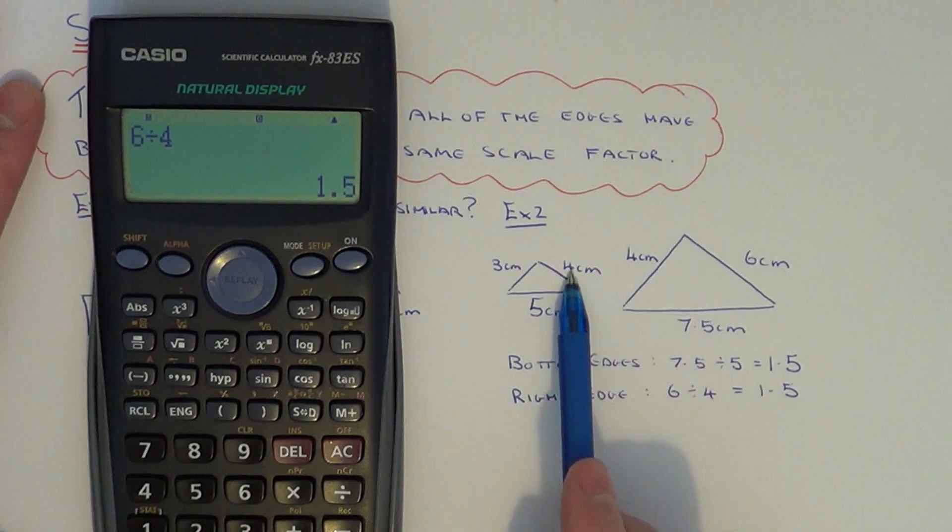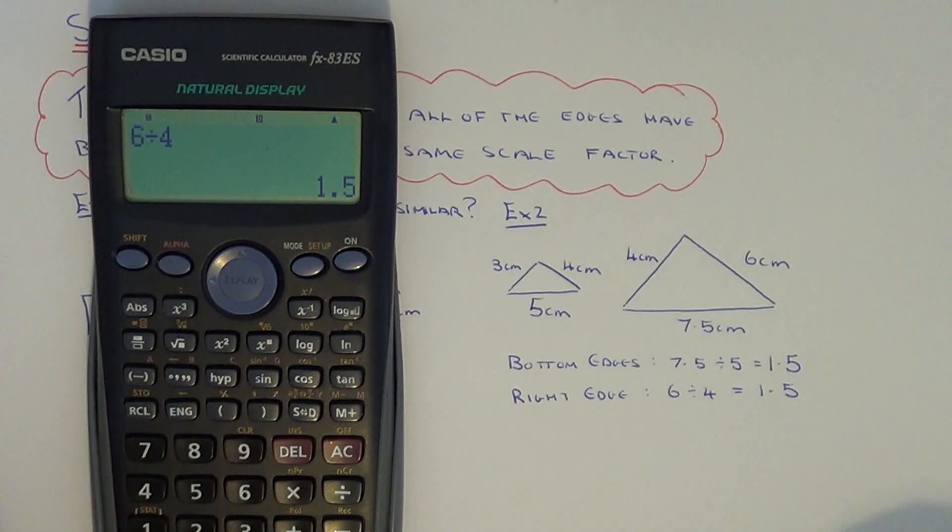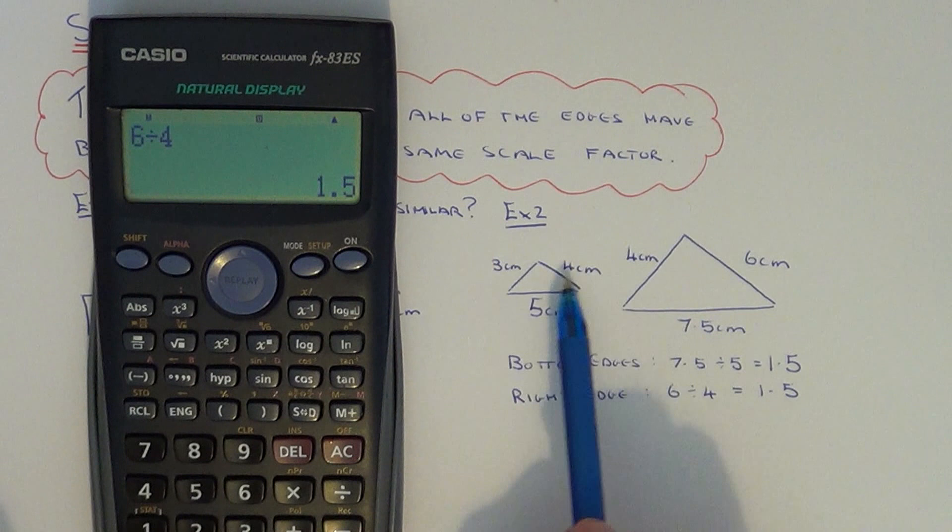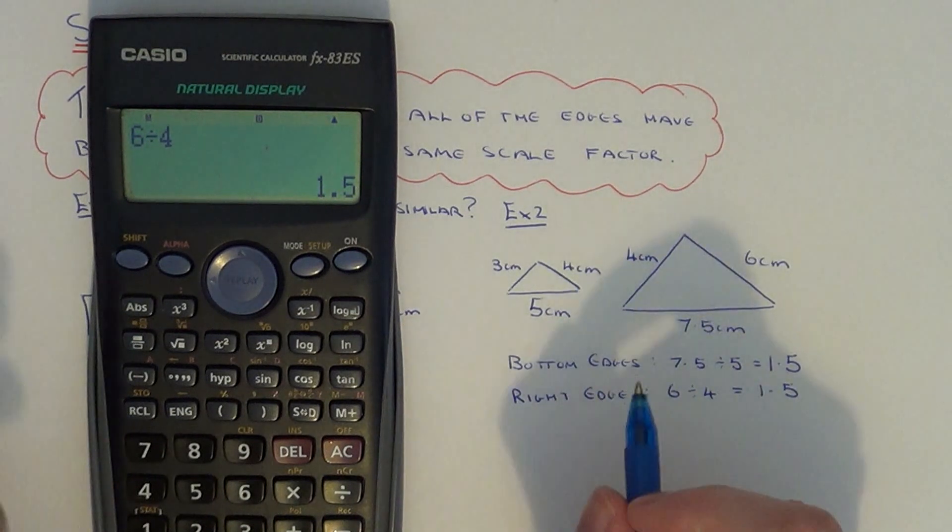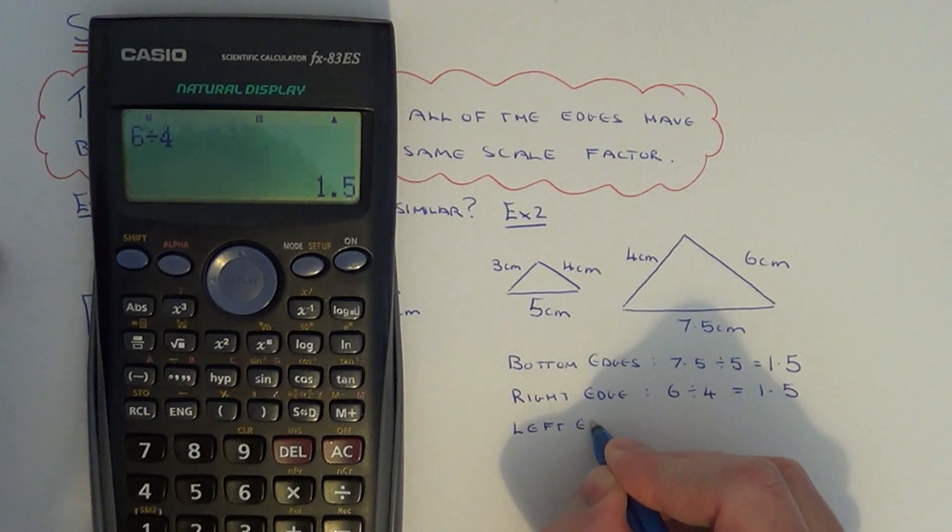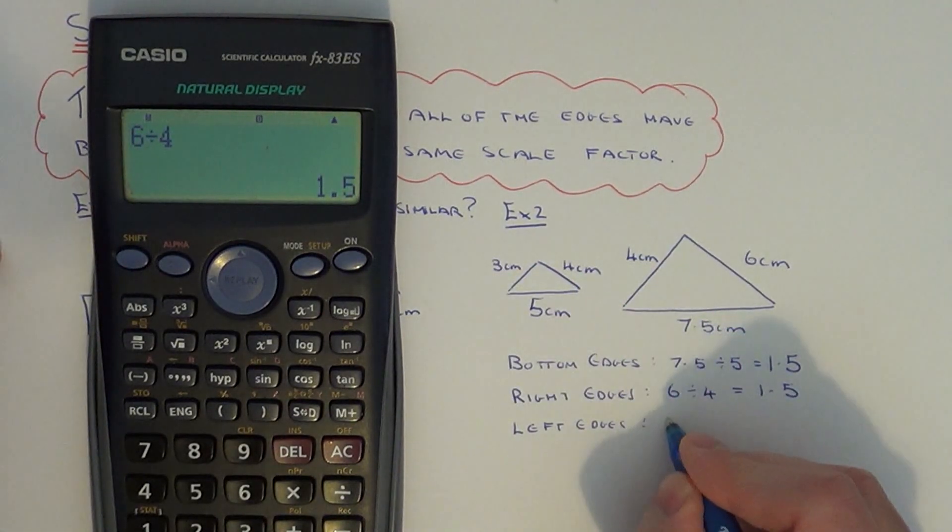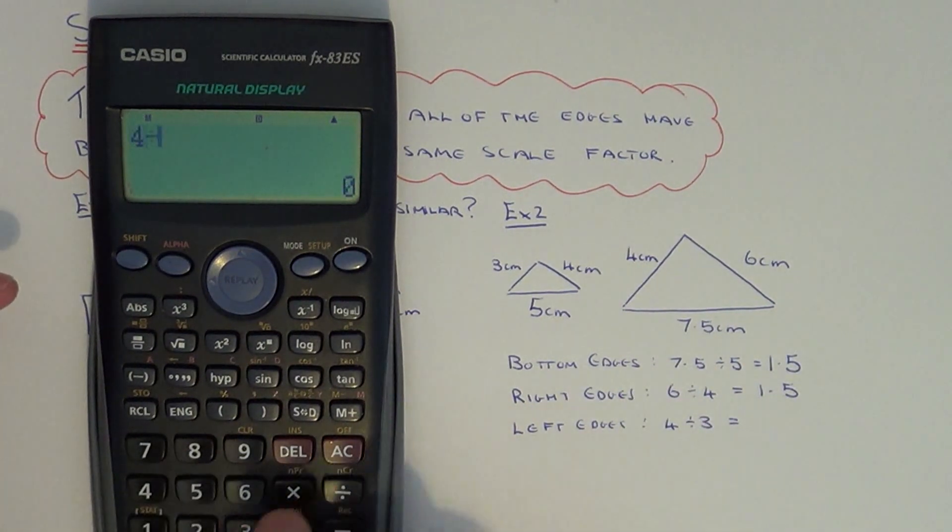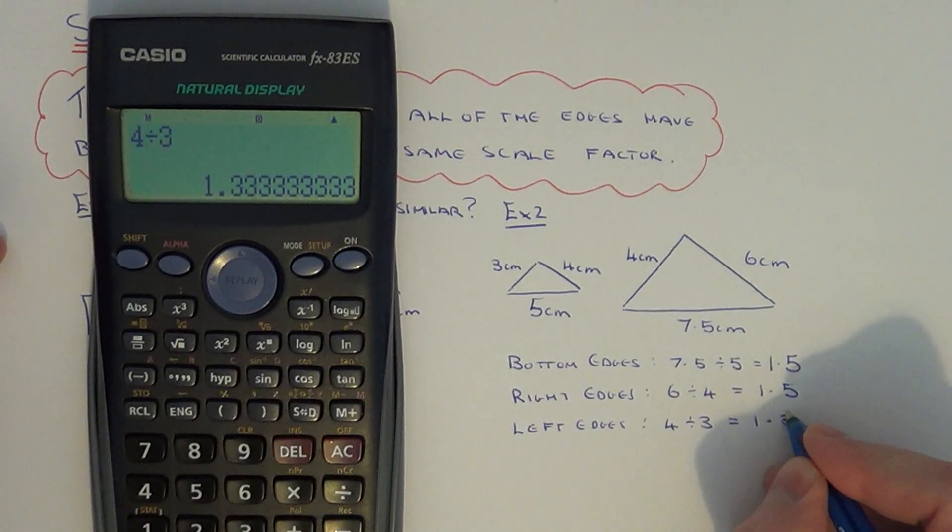These two edges that we've done so far have been enlarged by a scale factor of 1.5. If this is true for the remaining side, the left hand side of each triangle, then the shapes will be similar. So on our left edges, let's do 4 divided by 3, which gives 1.3 recurring.